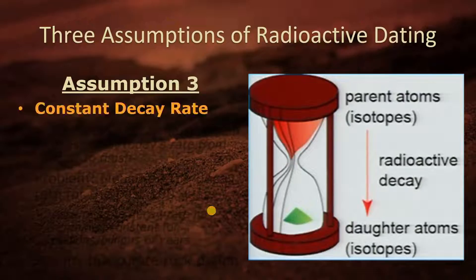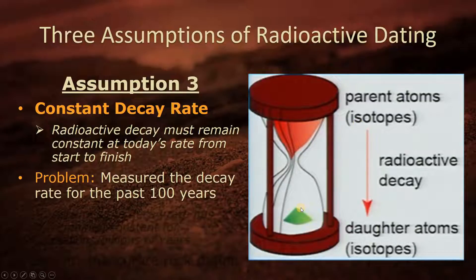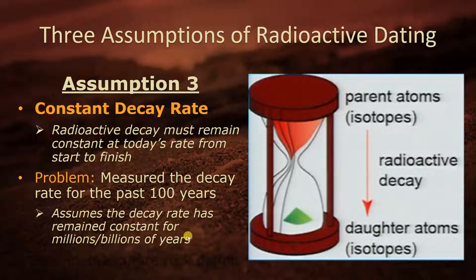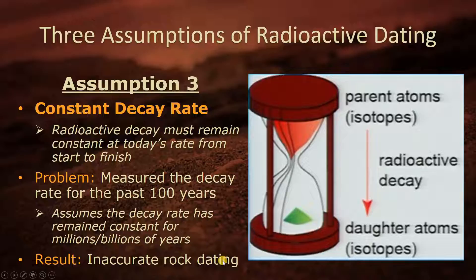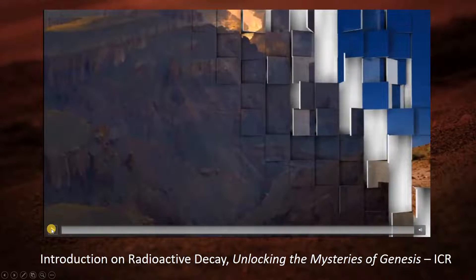Assumption three: constant decay rate. Radioactive decay must remain constant at today's rate from start to finish. The problem is scientists have only been measuring radioactive decay rates for the past 100 years. It assumes the decay rate has remained constant without any interruptions — with floods or any other mechanism — for millions and billions of years. The result would lead to inaccurate rock dating.